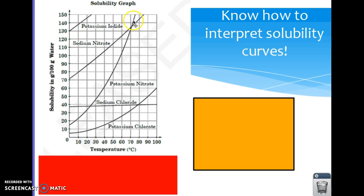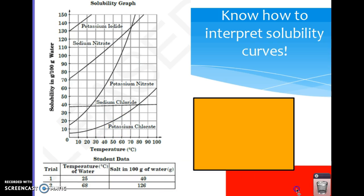Potassium nitrate, however, shows a huge increase as the temperature goes up. So that's how you read one of these graphs. So let's look at this sample question.